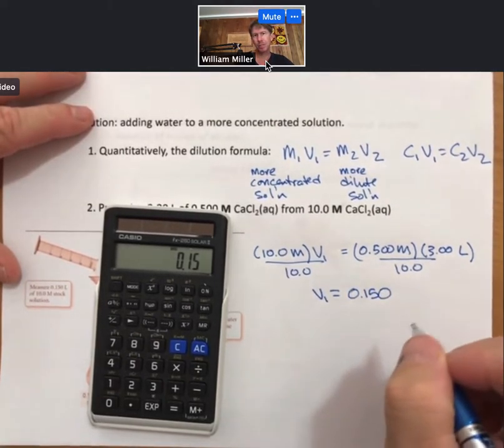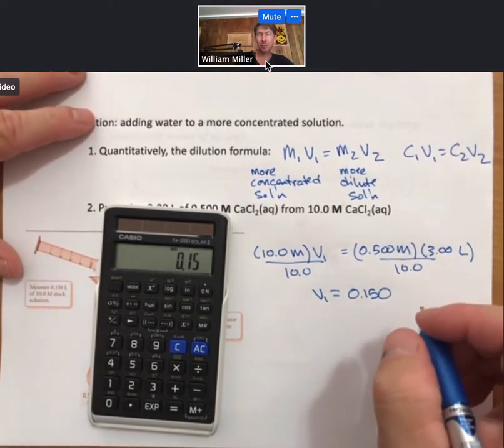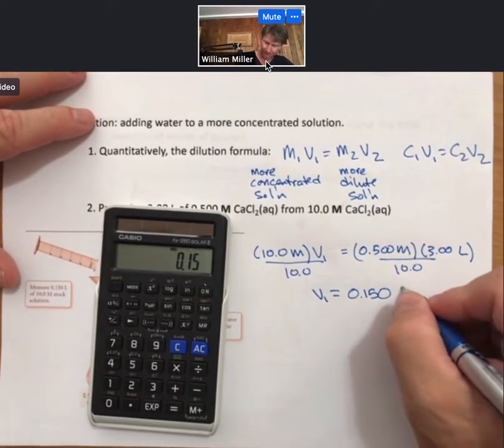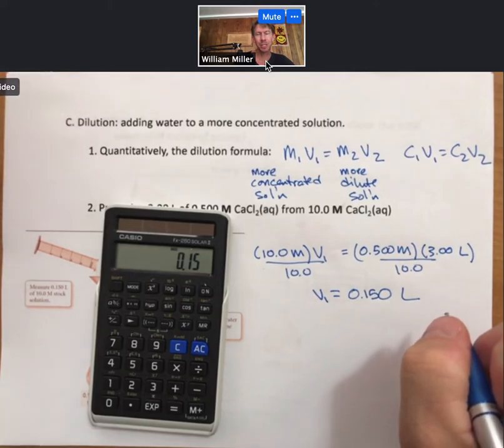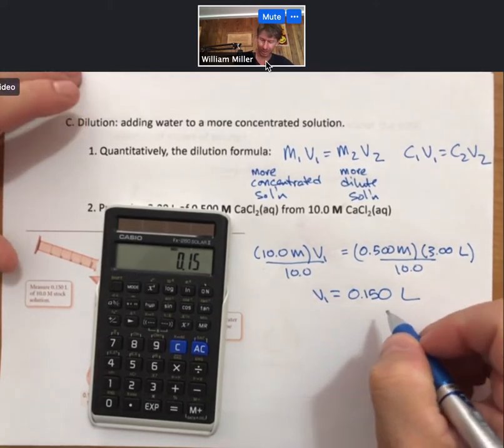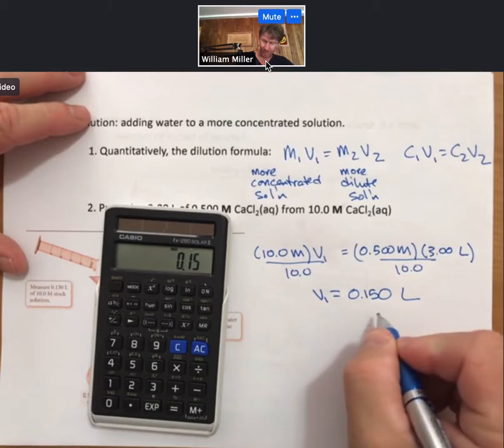Adding a third significant figure, because we always like to have three significant figures for lecture lab, or not lab, discussion or recitation work, and exams and quizzes. So there we go.